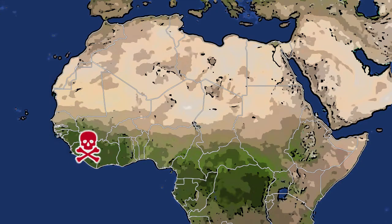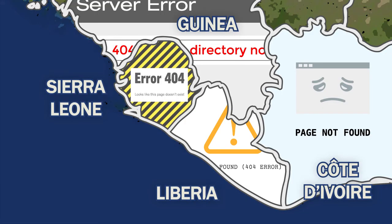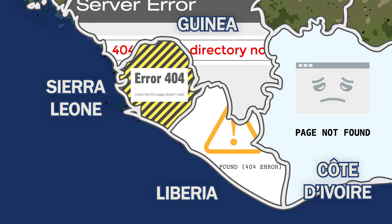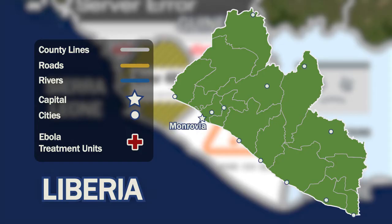Understanding human interaction with their environment helped Dr. Snow in London, but he couldn't have made that connection without a map. In 2014, when Ebola broke out in West Africa, the maps of the area were outdated and unreliable.